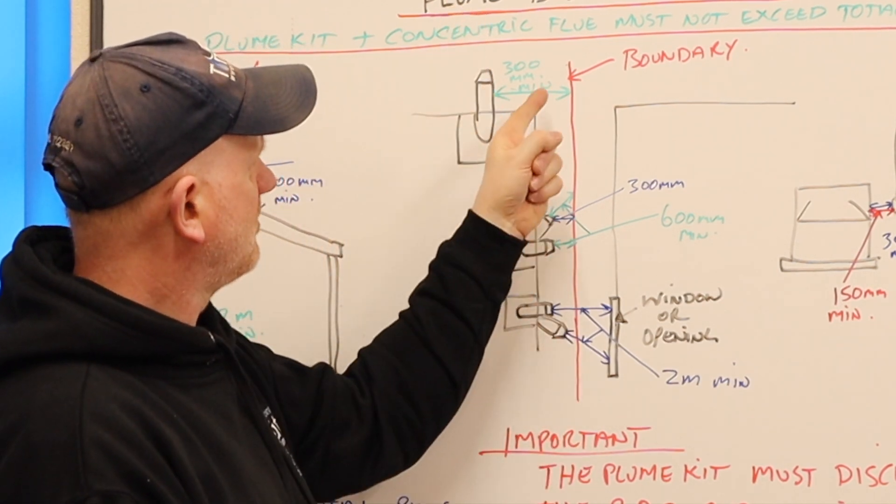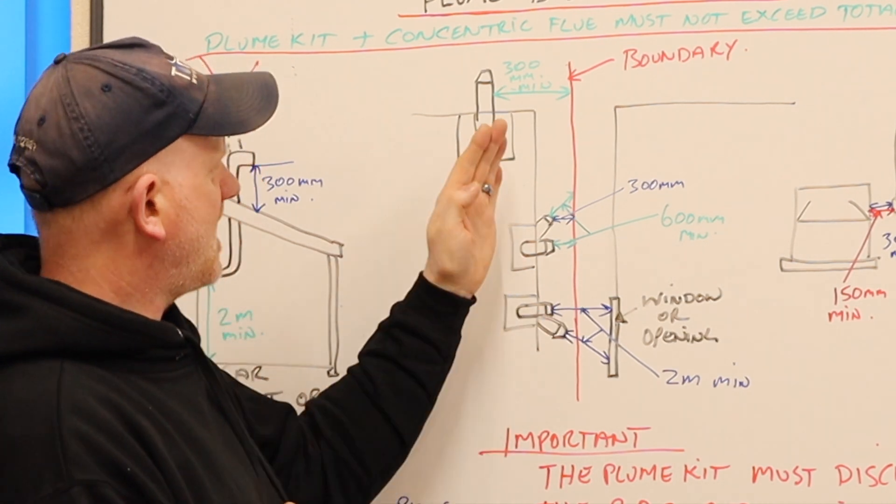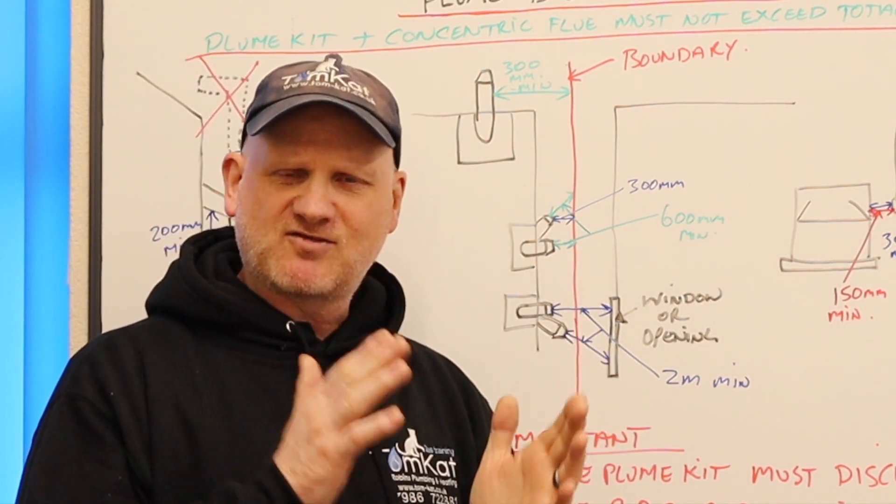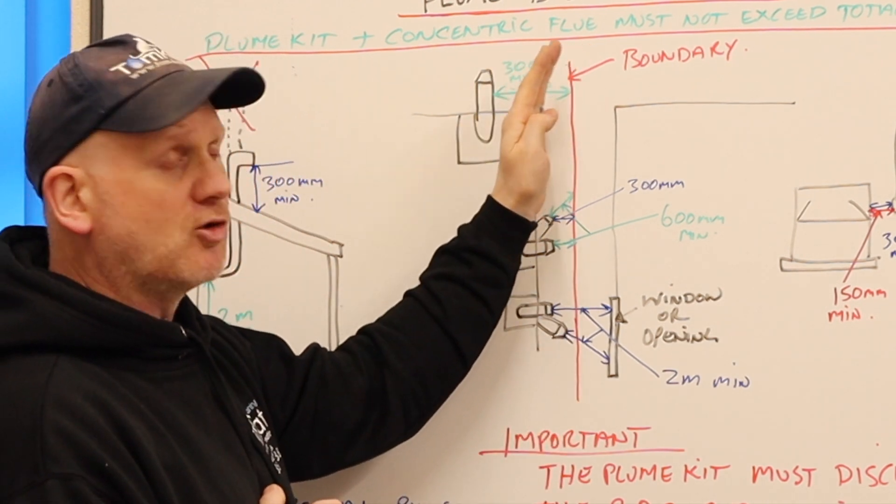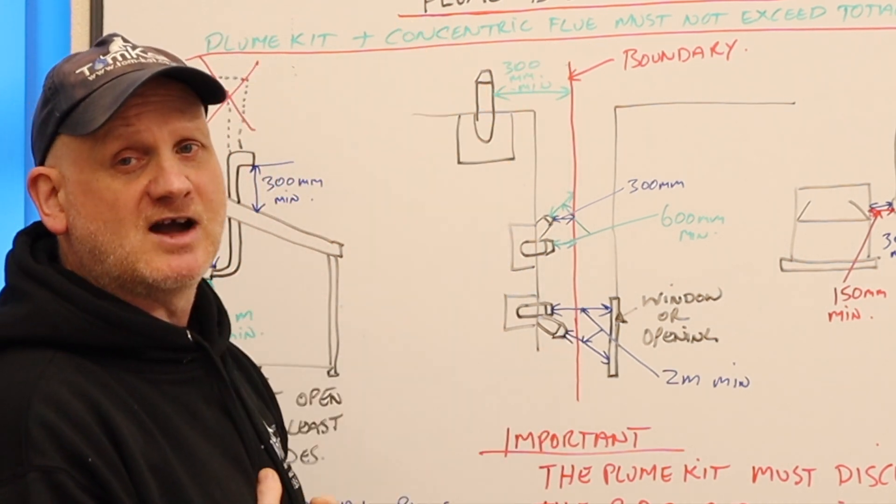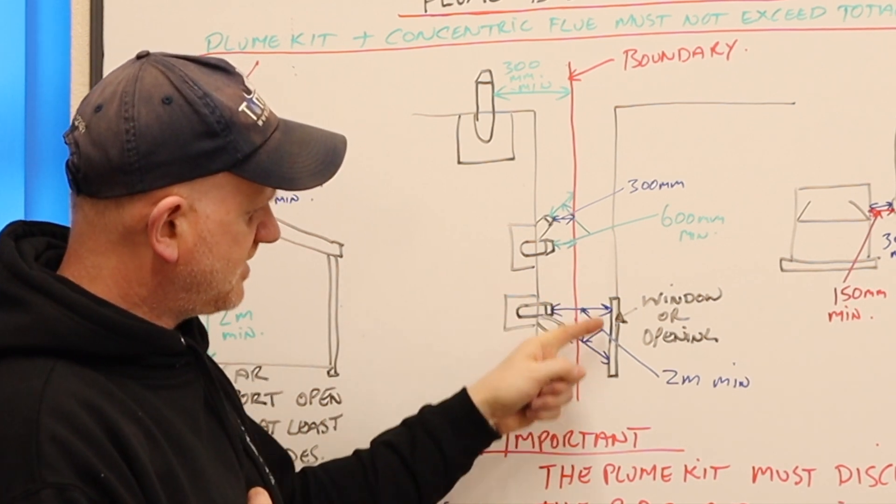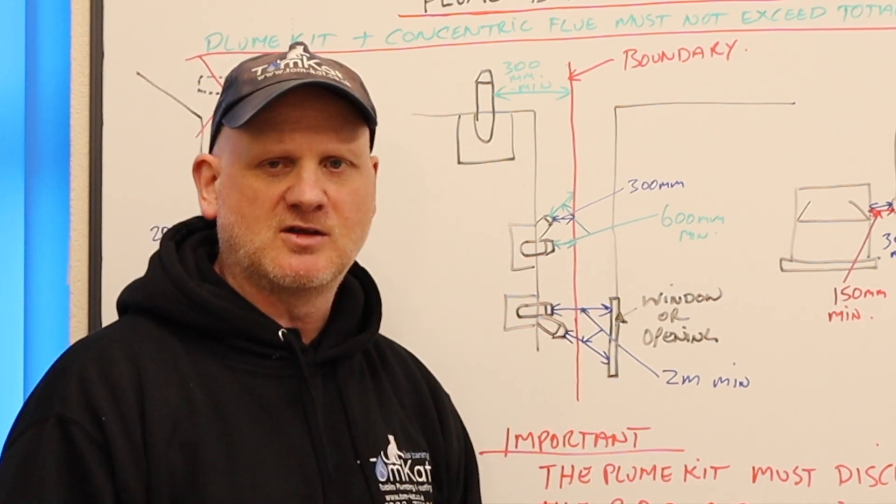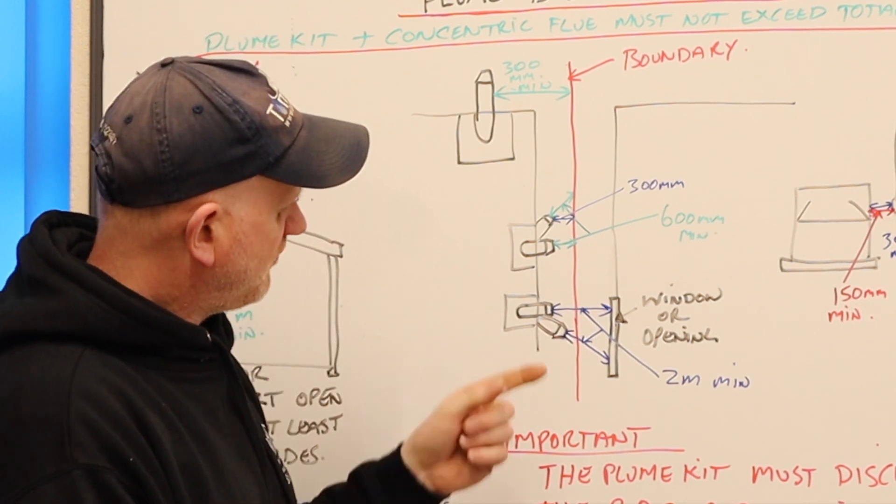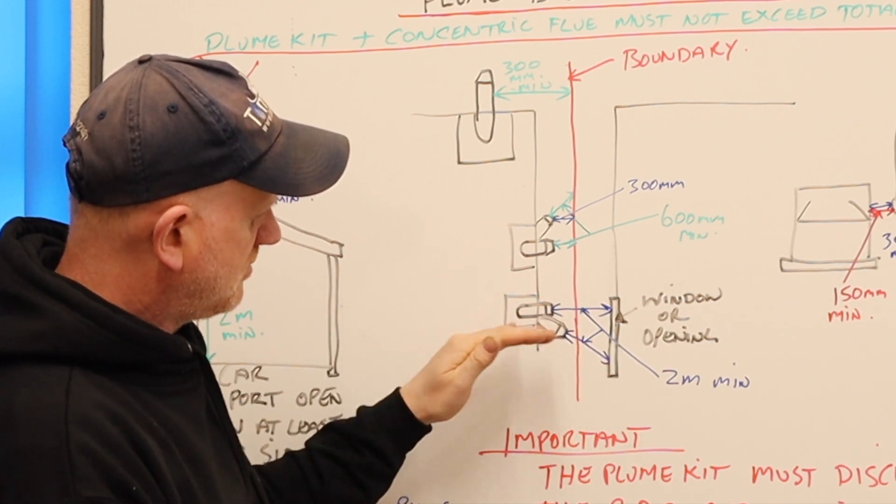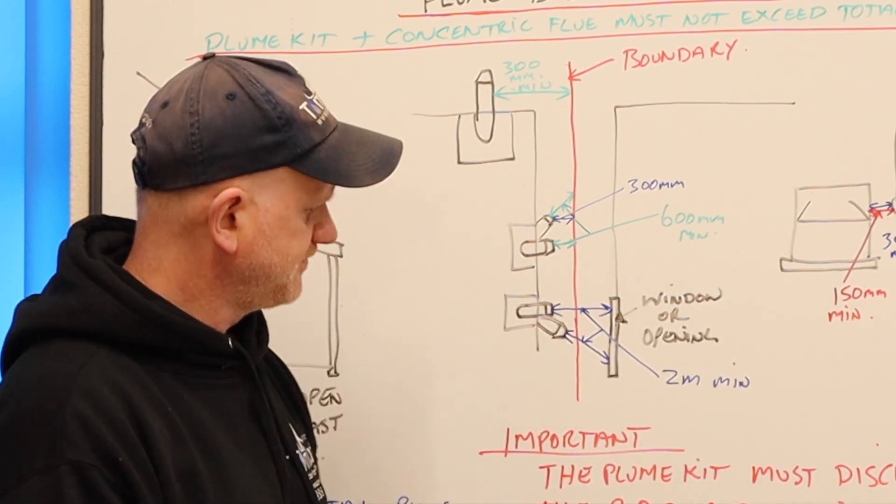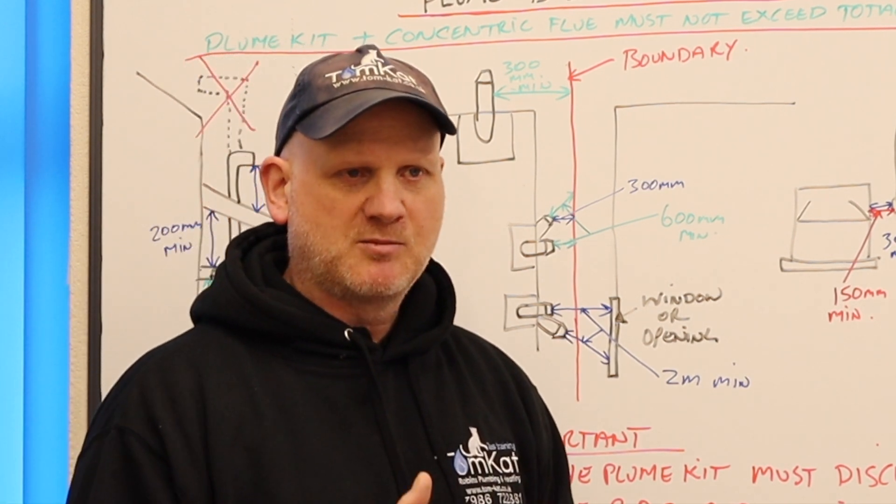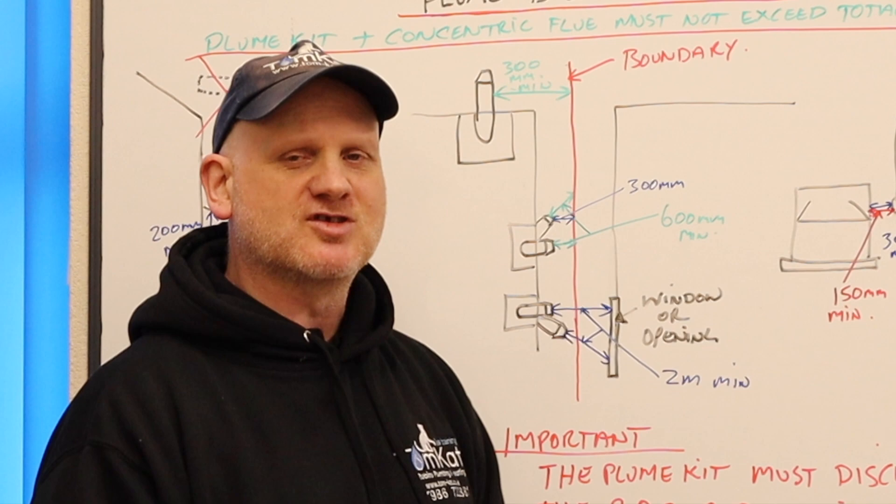Also, running parallel with the boundary we need to be 300 mil away. And again, if we're not 300 mil away we could use a plume kit going that way because basically what a plume kit does is halves your measurements. So we would only need to be 150 mil away if our plume kit was then on a 45 degree. It's pretty much like we've got down here where we're facing a window or a door or an opening into a building. We need to be two metres away according to 5440 part one. But if we have it on the 45 degree then we're still two metres away but technically we're only a metre away if we're facing it. So they're the good things what a plume kit can do. It can reduce your measurements by half but like I say only if the manufacturer says you can do.